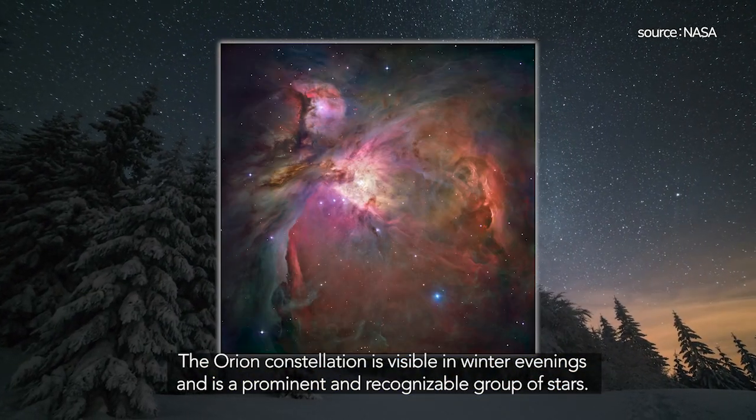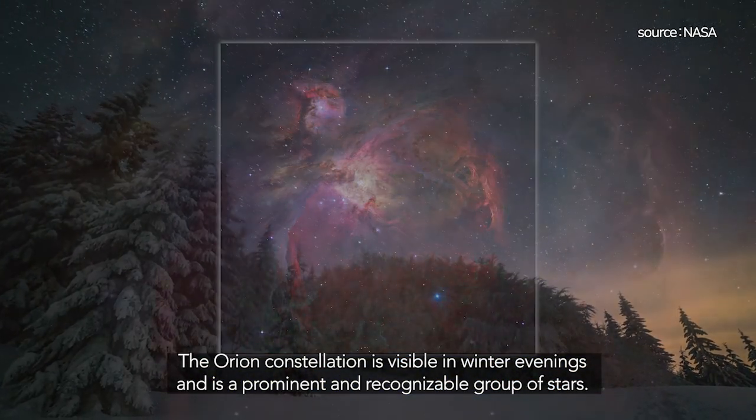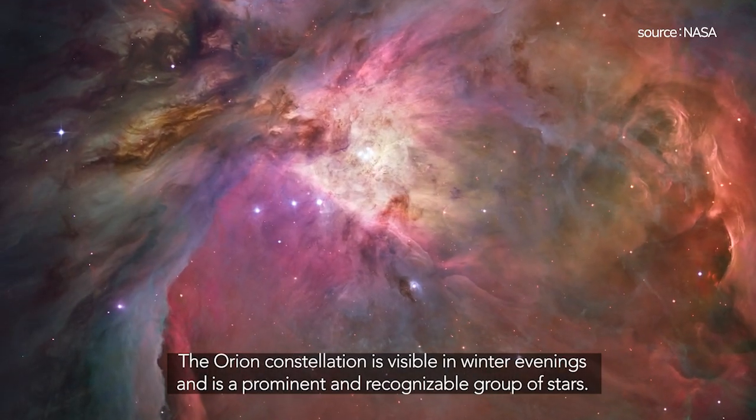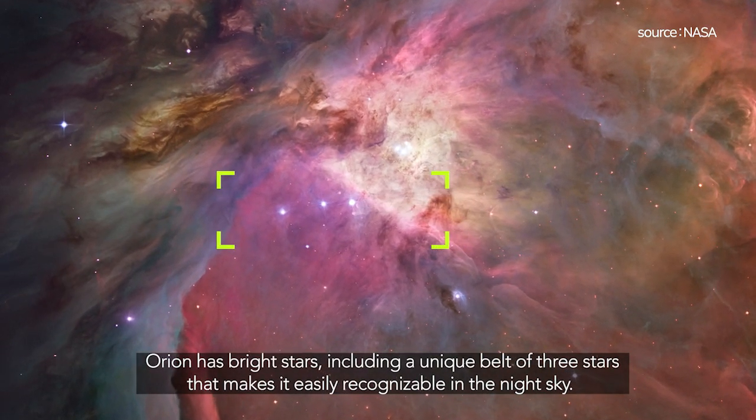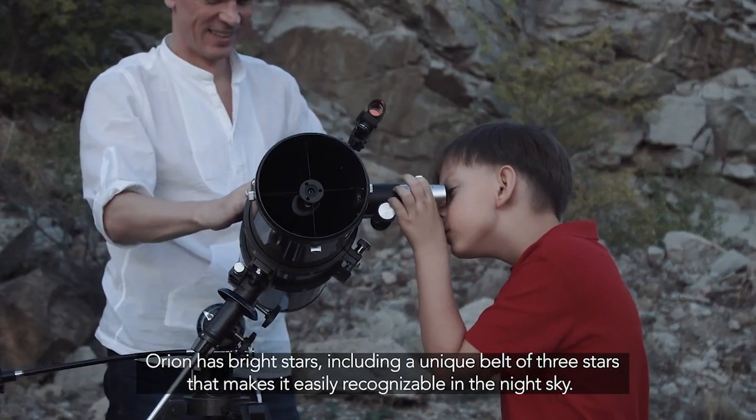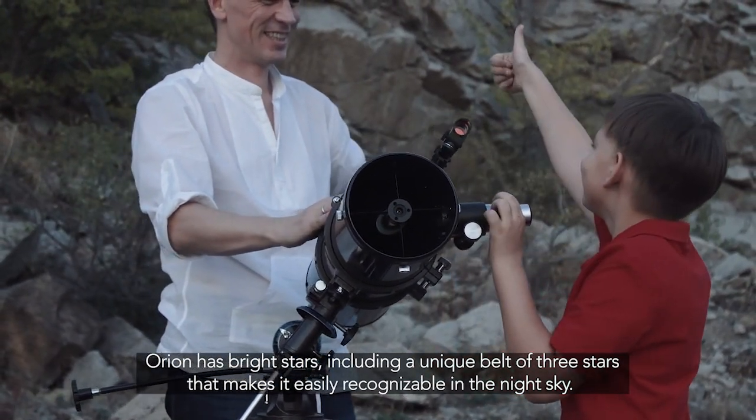The Orion constellation is visible in winter evenings and is a prominent and recognizable group of stars. Orion has bright stars, including a unique belt of three stars that makes it easily recognizable in the night sky.